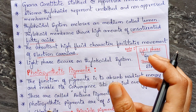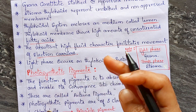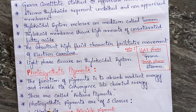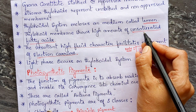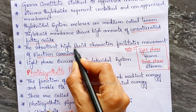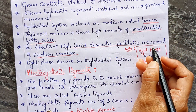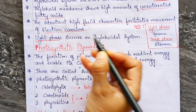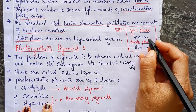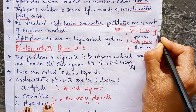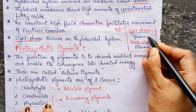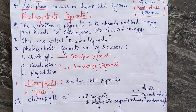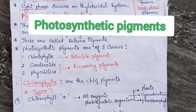The high fluid character due to unsaturated fatty acids allows electron carriers to move freely. The light phase occurs in the thylakoid system — specifically in the grana of the chloroplast — and the dark phase occurs in the stroma of the chloroplast. This is an important point to remember.